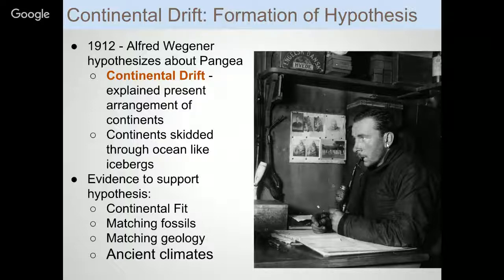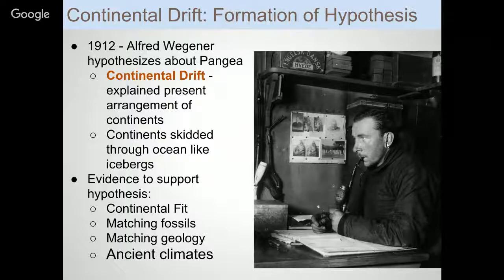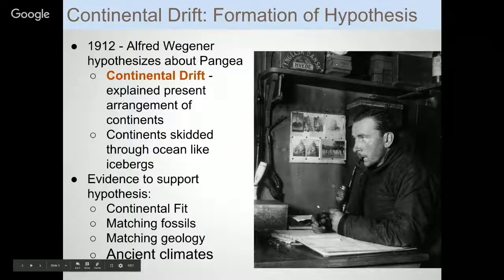He hypothesized that continents skidded through the oceans very much like icebergs. The evidence he provided included: the fit of how the continents come together, as seen in earlier maps; matching fossils between the continents, which we'll show in an upcoming slide; geology that matched across the Atlantic Ocean; and ancient climate inferred from that geology, which also matched across the oceans.